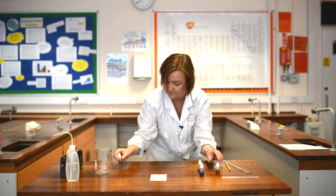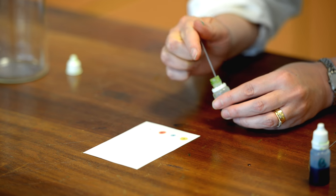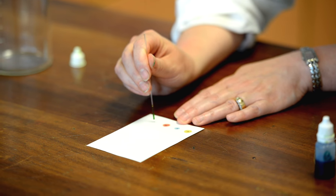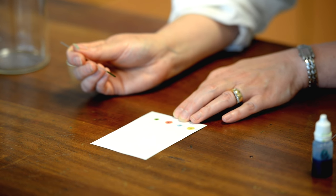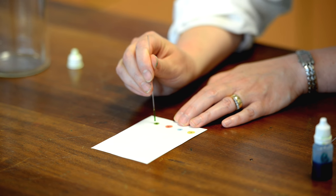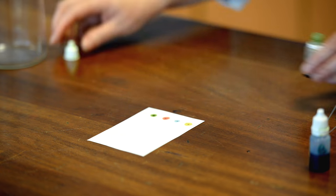And last of all I'm going to put my unknown coloring. This is green, so we can probably guess what colors are in it, but we will take this as our unknown. Dot it onto the final cross, again just do it once, twice, and then three times just to make sure we get plenty of the food dye on there.